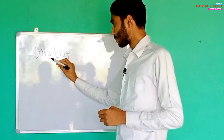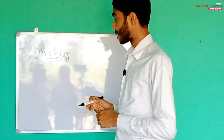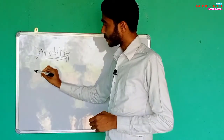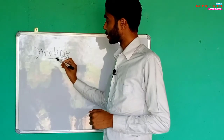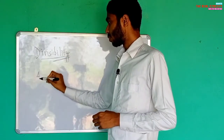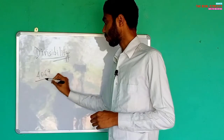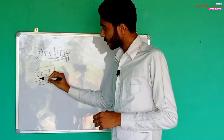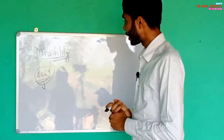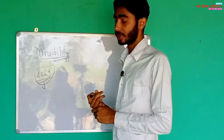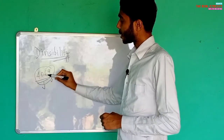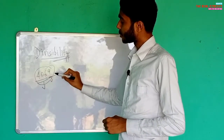Now we have to check the divisibility of a given number by three. What is the rule? Kisi bhi number ki divisibility three se kaise check karte hain? Let's take an example: 4069. We need to check whether this number is divisible by three or not, without using division.